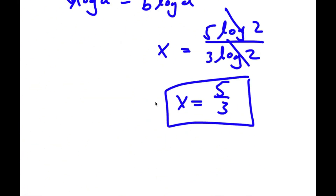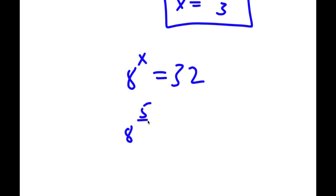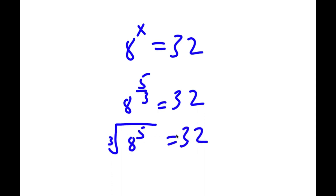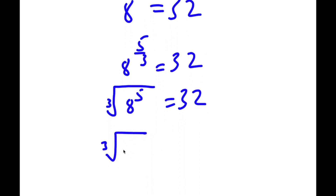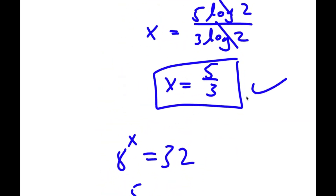Now to check: 8 to the power of x equals 32, with x equal to 5 over 3. So 8 to the power of 5 over 3 is the same as the cube root of 8 to the power of 5. 8 to the power of 5 equals 32,768, and the cube root of that is 32. So 32 equals 32, meaning x equals 5 over 3 is correct.